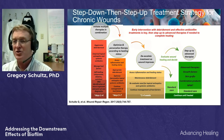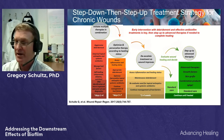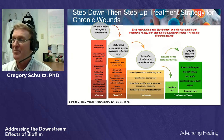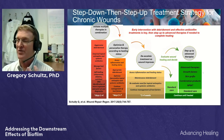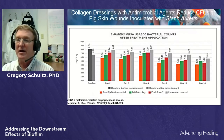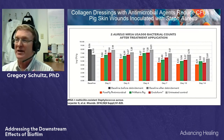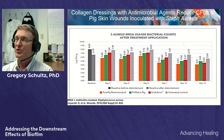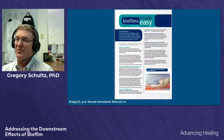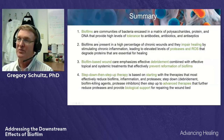If a patient has other comorbidities requiring additional help, you can step up by using advanced therapies such as growth factors, skin grafts, etc., that will accelerate healing because they're in a wound bed where treatments will be effective. Using collagen dressings with antimicrobial reagents can also reduce CFUs in pigskin wounds inoculated with Staph aureus. These concepts are summarized in the free download Biofilms Made Easy.